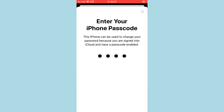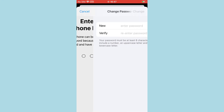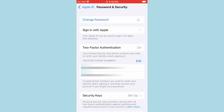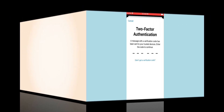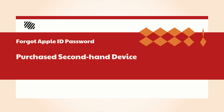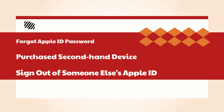If you didn't turn on the iPhone passcode, you can still reset the password via two-factor authentication. But this only works when you have another trusted iOS device or your phone number is available. Now, how do you sign out of Apple ID without a password if you purchased a secondhand iPhone, or need to sign out of someone else's Apple ID on your iPhone?